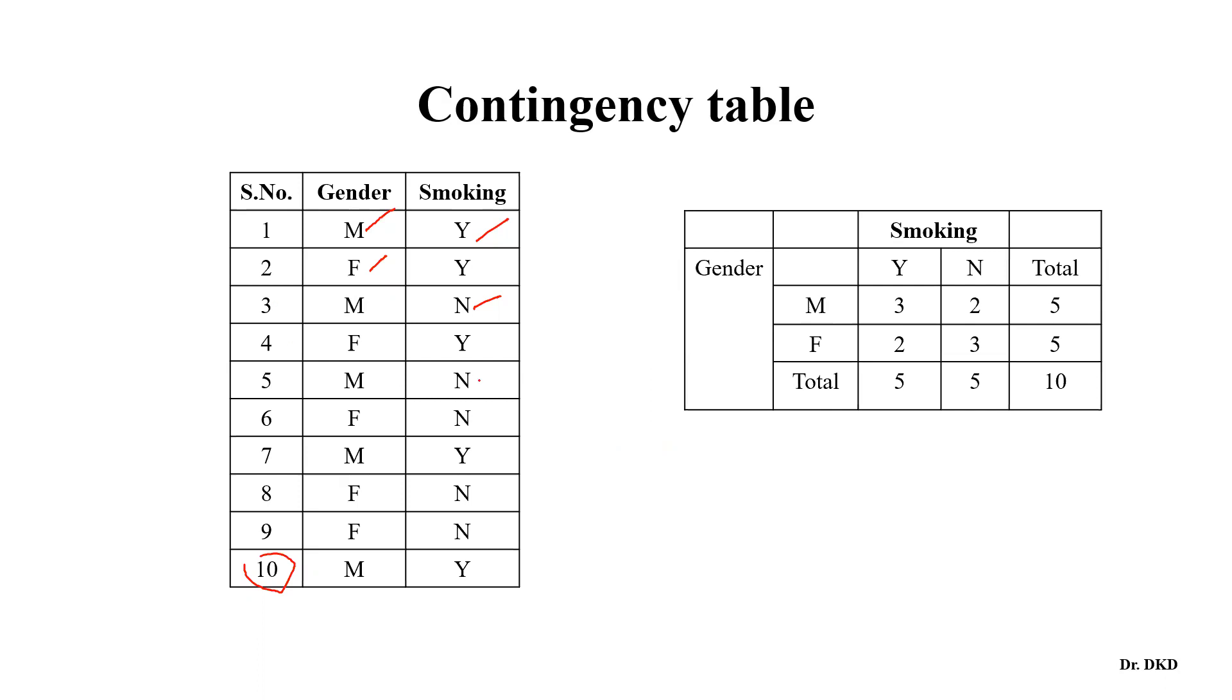So with the help of this table, this is known as the contingency table. Here smoking is a binary outcome - yes and no. Here gender is a binary outcome - male and female.